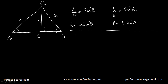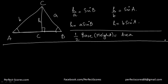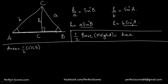Now, what is the area of a triangle? Area of a triangle is given by half times base times height. So area of the triangle is half times C times H. This H can be replaced in two ways: as A sin B or B sin A.